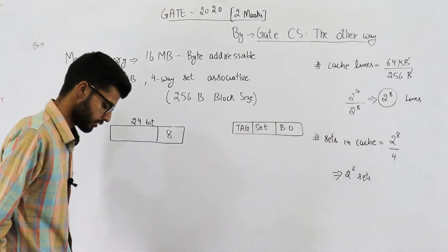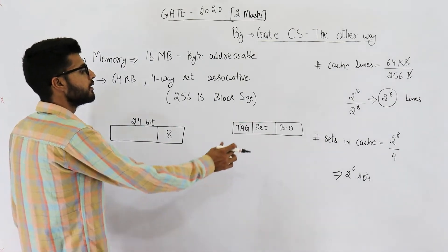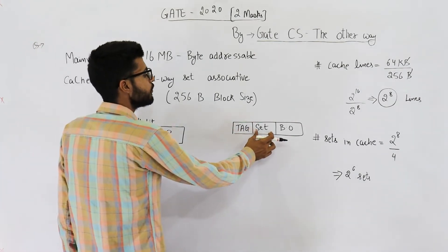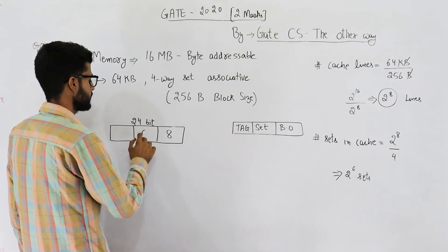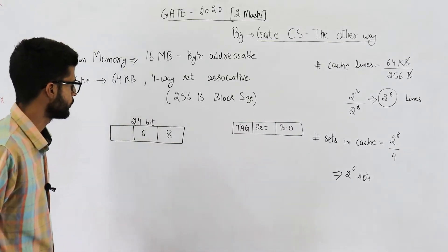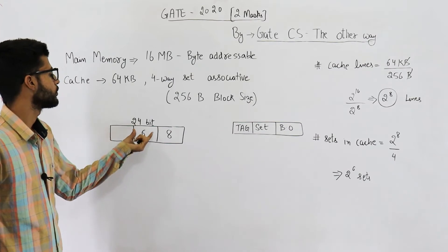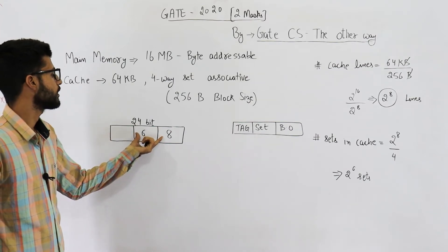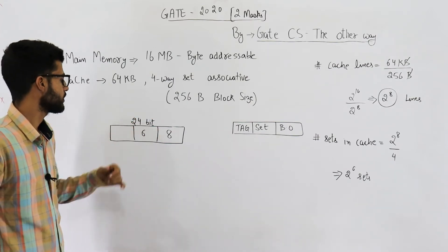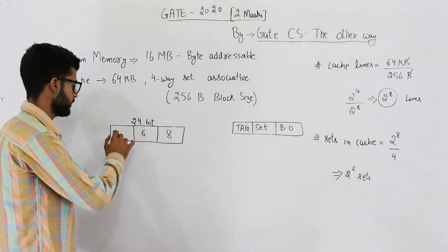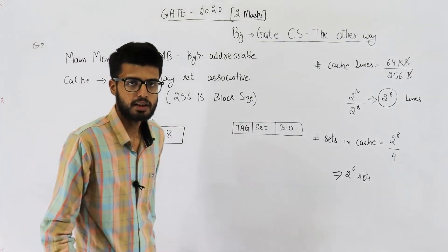Since there are 2^6 sets, the set field will be 6 bits. That leaves 24 minus 14 equals 10 bits in the tag field. So the address is split as: 10 tag bits, 6 set bits, and 8 block offset bits.